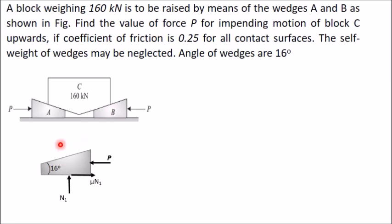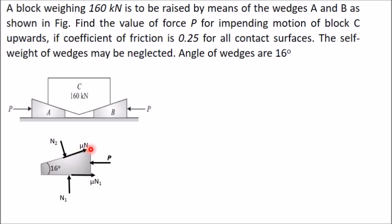Because of block C acting on wedge B, a normal reaction N2 appears perpendicular to that inclined surface. Since motion is towards the left, the friction force at this surface acts in the opposite direction, giving a friction force of μN2.